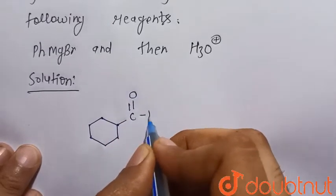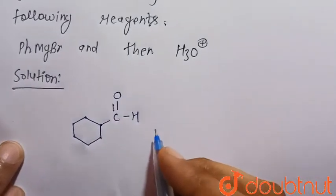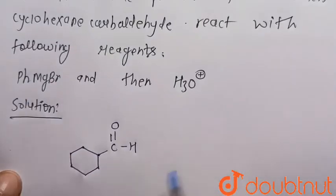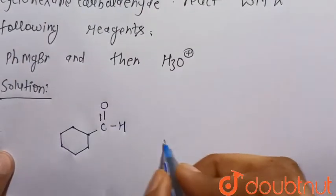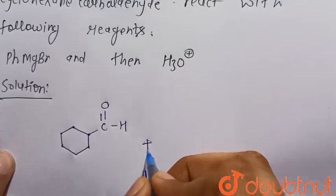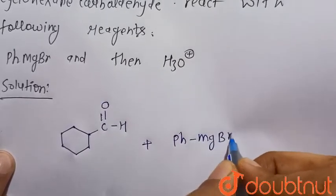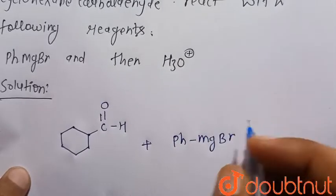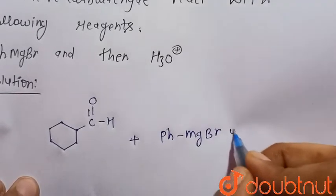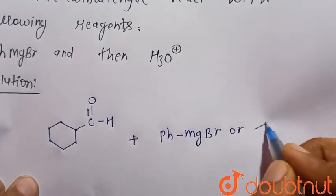So when it is treated with the reagent PhMgBr, that is the Grignard reagent. PhMgBr, or we can write, we know that Ph is the phenyl, so this is MgBr.